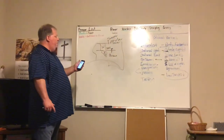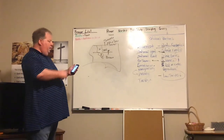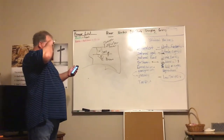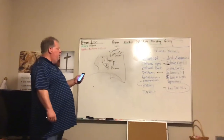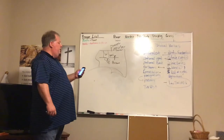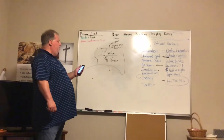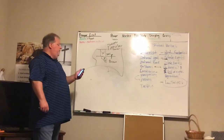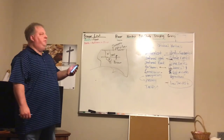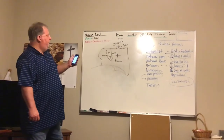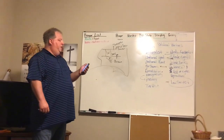Abraham Lincoln became the 16th president in 1860 and the first Republican president. In Lincoln's inaugural address, he said he was not going to free the slaves — he only wanted to prevent the South from seceding or leaving the Union.